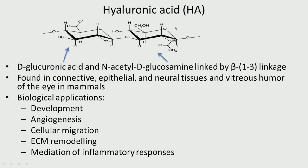Let us look at hyaluronic acid. It is obtained from bacteria. Hyaluronic acid is made of glucuronic acid linked with N-acetyl glucosamine. The acetyl group is CH3CO, and we also have the amine group. They are linked by a beta 1,3 linkage. So hyaluronic acid is made up of glucuronic acid and N-acetyl glucosamine linked by beta 1,3. It is found in connective tissues, epithelial tissue, and the vitreous humor of the eye in mammals. It provides a sort of lubrication in connective tissues and is also found in the eyes.